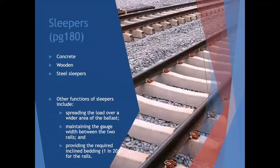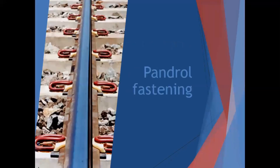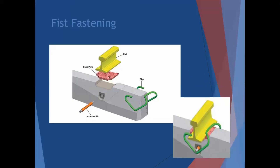Then you get fasteners - this is the stuff holding the rail in place. They secure rails on the sleepers and restrict movement. Fastening must provide a strong bond, prevent creep, provide electrical insulation, and have good fatigue resistance. You can see one type with a clip bolted in. Then there's the fist fastening system - a whole system with a base plate, a pin, and a clip. The base plate goes in, the clip goes in, the pin goes in, and you're done.